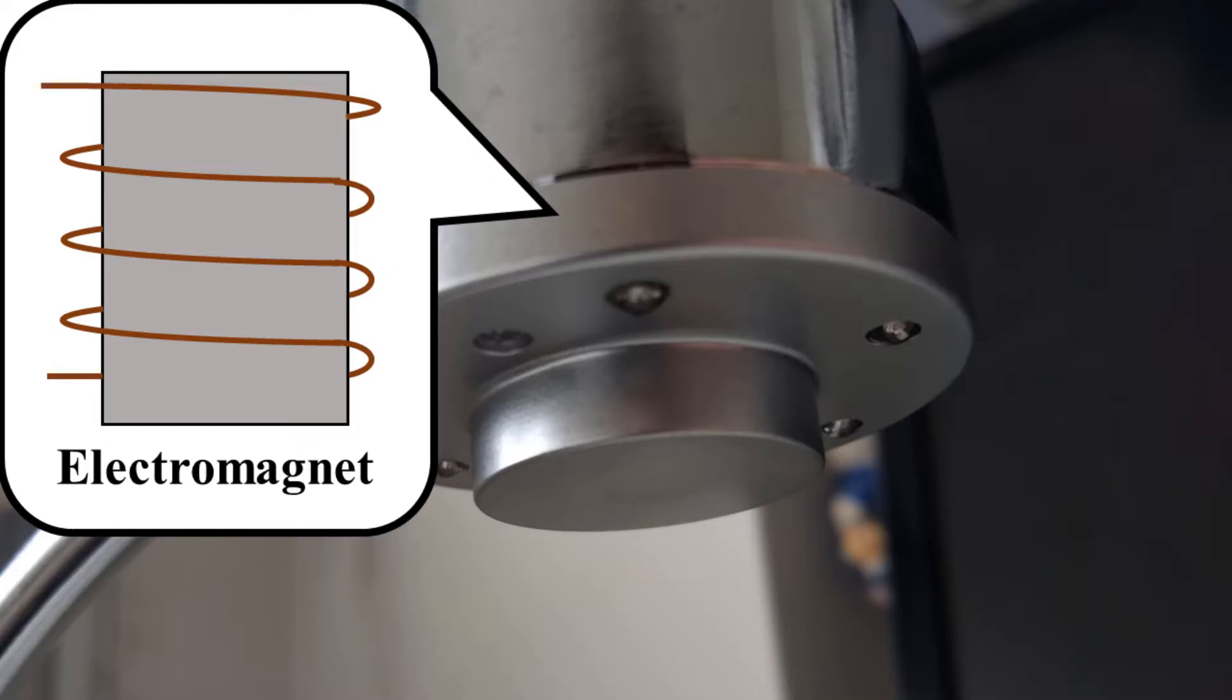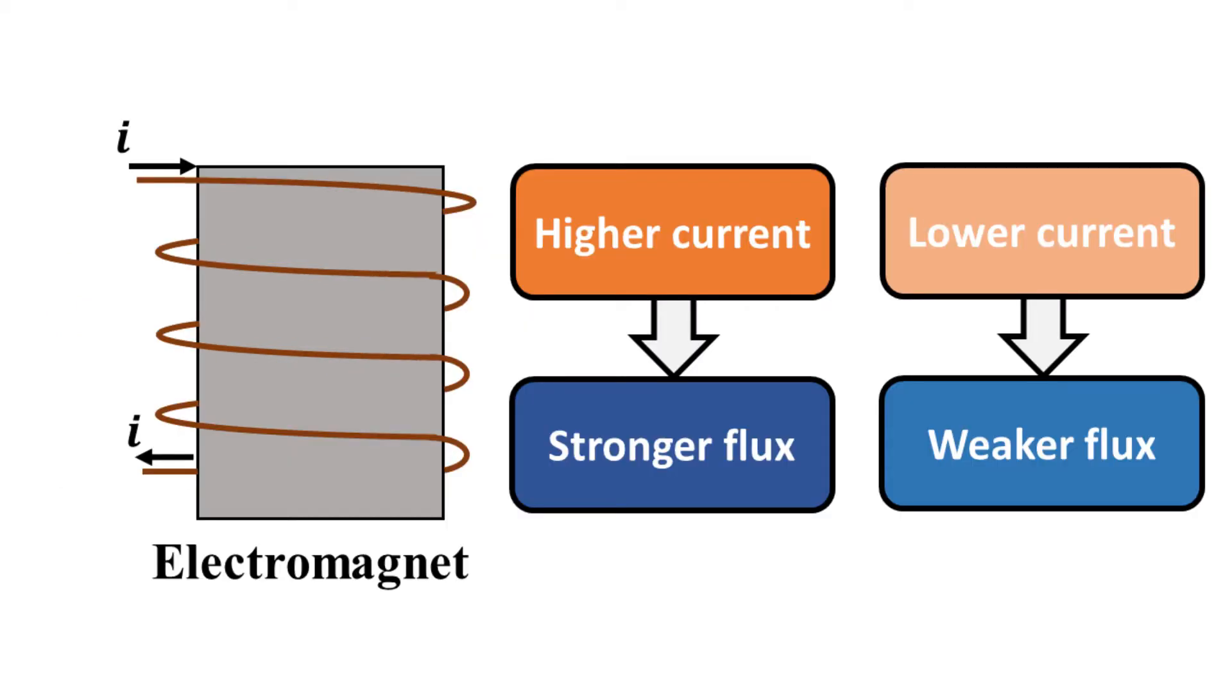This magnetic stand is also equipped with an electromagnet. So, it is possible to control magnetic flux by varying the current being fed to the coil.